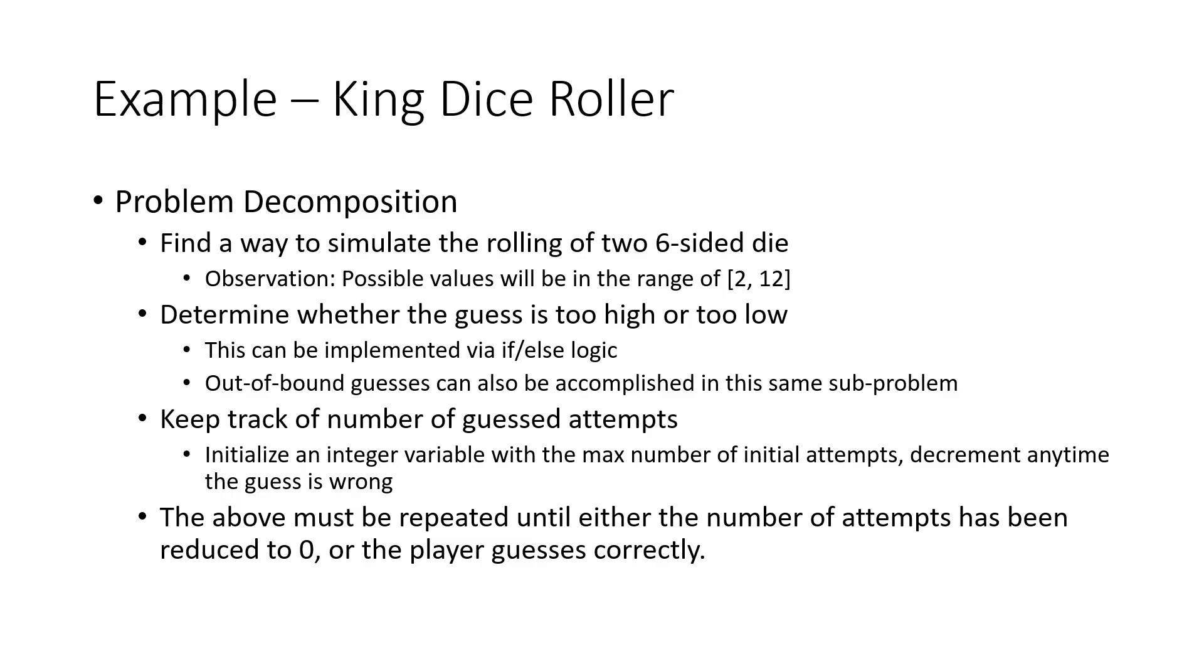Another sub-problem identified is keep track of the number of guess attempts. An easy way of doing this is simply to initialize an integer value with the max number of initial attempts, and then we simply just have to decrement any time the guess is wrong. This is pretty easy and straightforward to accomplish. Another observation: because the player has a maximum of three guesses, if the player has a max of three guesses, we're not going to write the same pieces of code three times, right?